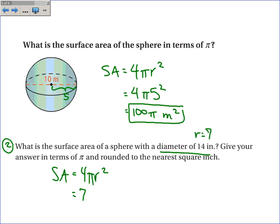So it's 4 pi 7 squared. Now, in terms of pi, I will do 4 times 7 squared, or 4 times 49. And I got 196. So 196 pi inches squared is what the answer is in terms of pi.